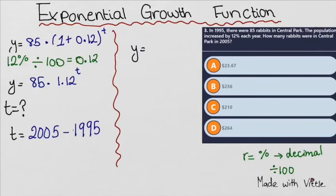The equation we have is 85 times 1.12 to the power of 10. Calculating this gives us 263.99, which rounds to 264.